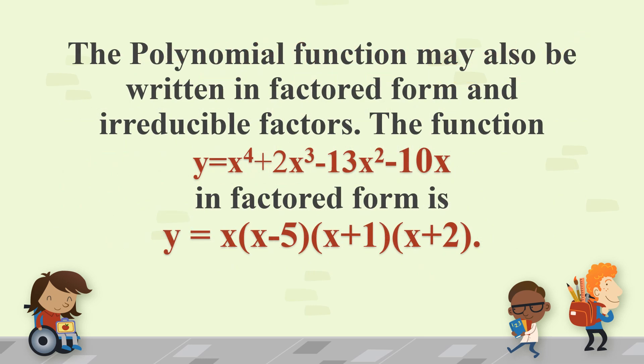The polynomial function may also be written in factored form and irreducible factors. The function y = x⁴ + 2x³ - 13x² - 10x in factored form is y = x(x - 5)(x + 1)(x + 2). So in other words, our polynomial function can be written in factored form. So like this, you can immediately see the factors of our polynomial function.